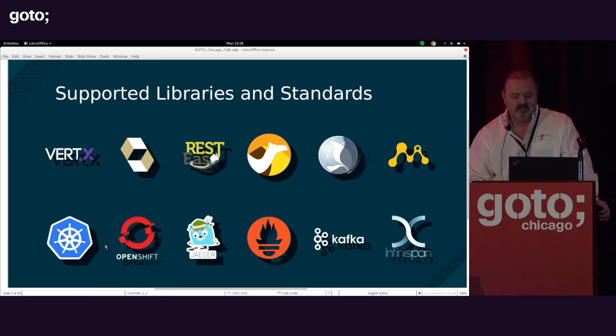Libraries include Vert.x, Hibernate, RestEasy, Camel, Netty, MicroProfile, Kubernetes, OpenShift, Jaeger, Prometheus, Kafka, Infinispan — and we probably have another 30 libraries that are part of the Quarkus family at this point.